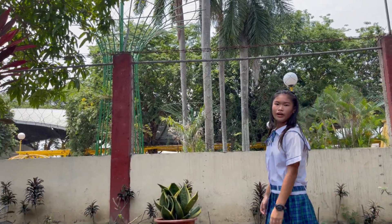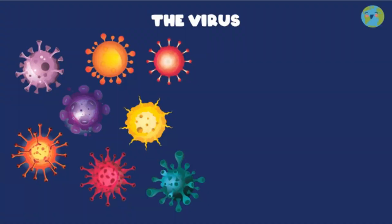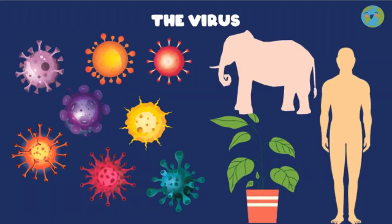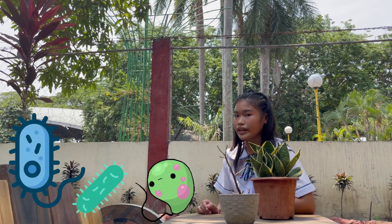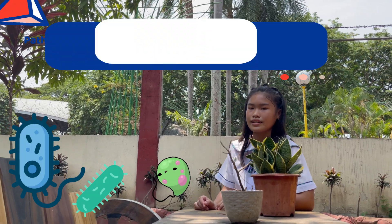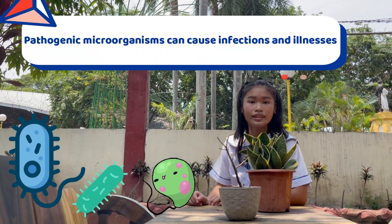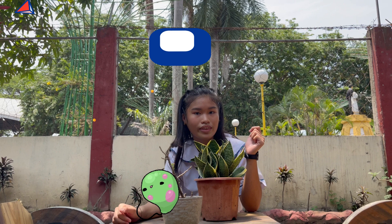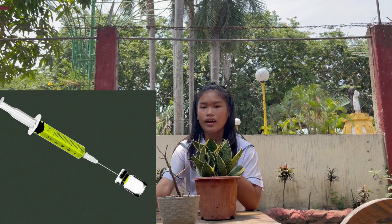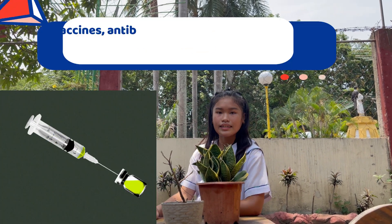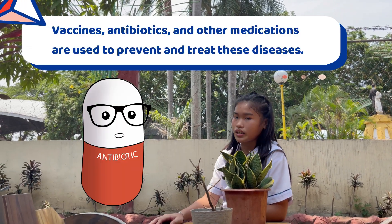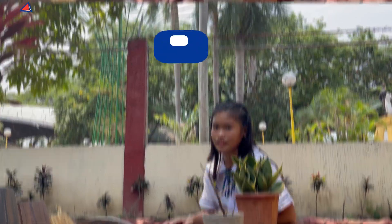However, some microorganisms can also cause disease in humans, animals, and plants. Pathogenic microorganisms can cause infections and illnesses such as pneumonia, tuberculosis, and COVID-19. Vaccines, antibiotics, and other medications are used to prevent and treat these diseases.